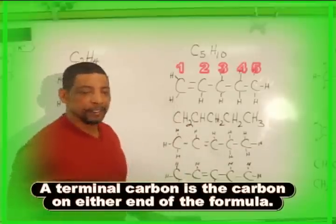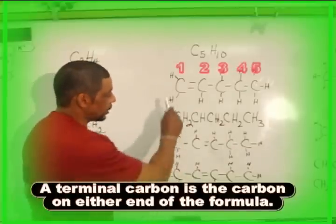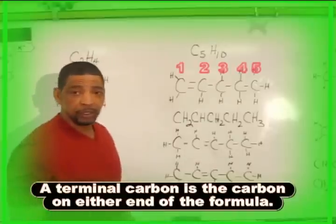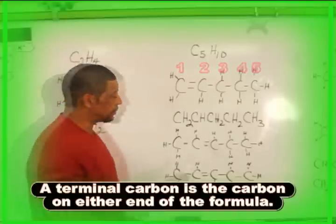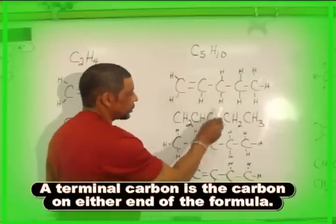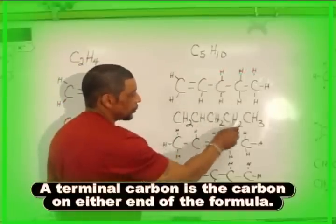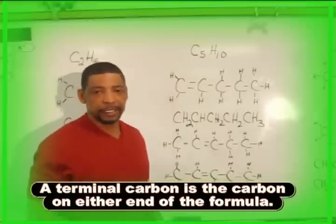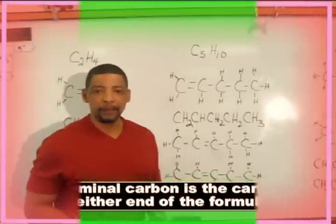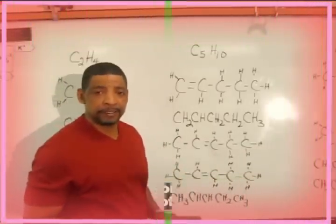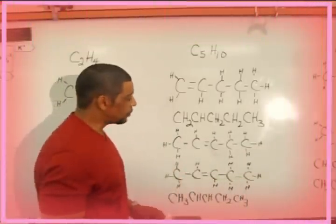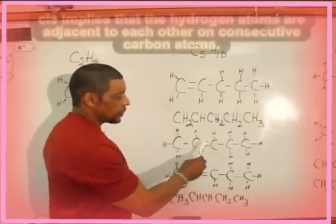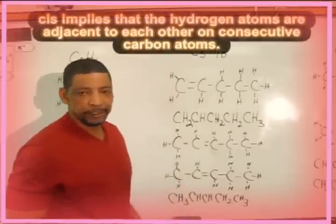To write the condensed formula for 1-pentene, simply copy the structural formula: CH2, CH, CH2, CH2, CH2, and CH3.